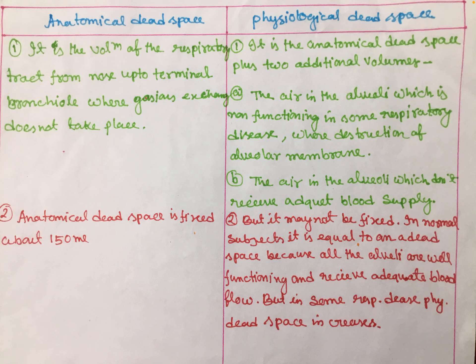Physiological dead space is the anatomical dead space plus two additional volumes: the volume in alveoli that are not functioning due to respiratory diseases with destruction of alveolar membranes, and the volume in alveoli that do not receive adequate blood supply. These two extra volumes are added to the anatomical dead space to form the physiological dead space.